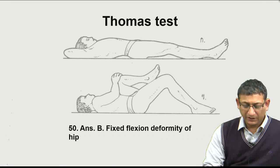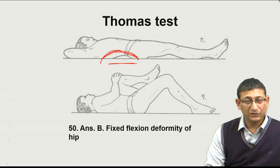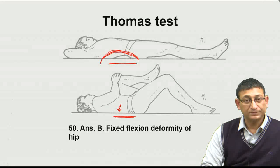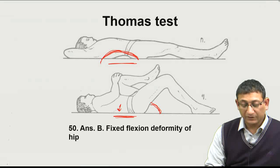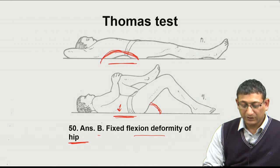When lying on the bed, the lumbar spine will not touch the surface due to exaggerated lordosis. To correct this, we ask the patient to flex the normal limb, which corrects the lordosis so the back touches the couch. In doing so, the deformity compensated in the lumbar spine reappears in the hip joint, and the hip is lifted — this angle gives the measure of fixed flexion deformity. The answer to question number 50 is P — the Thomas test assesses fixed flexion deformity of the hip joint.